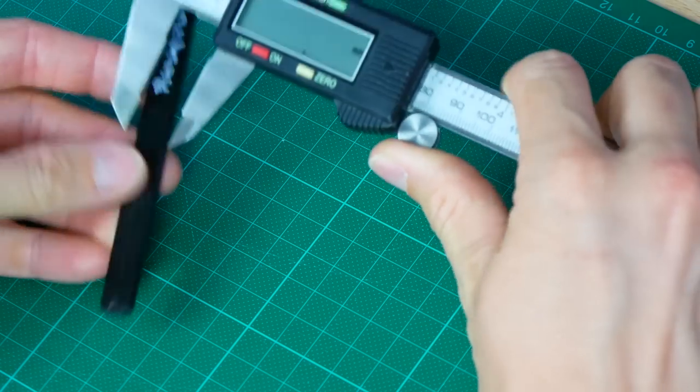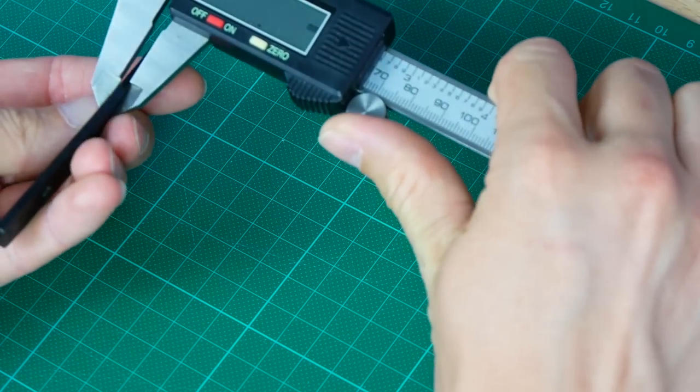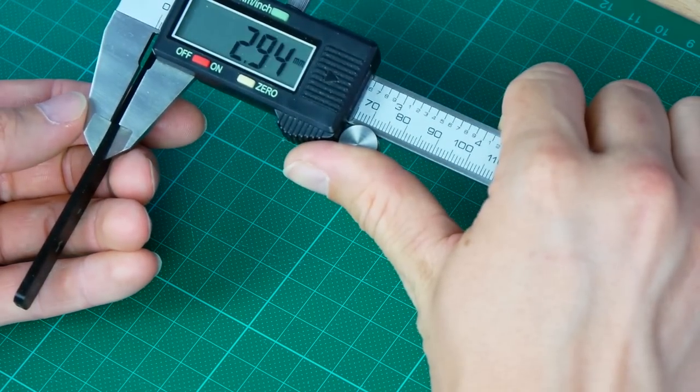One of these will be tested in its as printed condition and one will be annealed. I measured the dimensions of all specimens to see how much they change during the annealing process because this is a common problem.